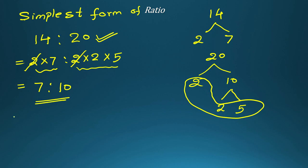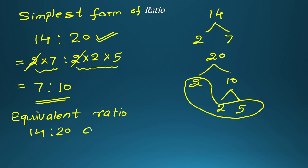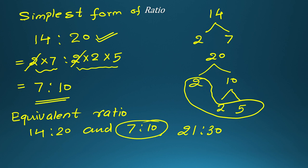This simplest form is also called an equivalent ratio. So 14 ratio 20 and 7 ratio 10 are equivalent ratios. Similarly, if you multiply by 3, then 21 ratio 30 is also an equivalent ratio, because when you write it in simplest form, you will again get 7 ratio 10.